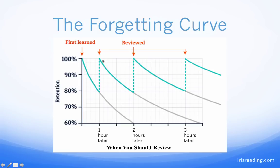Eventually we review the information and then we start forgetting again, but it's not nearly as steep as it was earlier. Why? Because we reviewed it a second time. If you review it a third time, it doesn't get as steep. Notice how it's kind of leveling out more and more. The more you review something, the less likely you are to forget it.